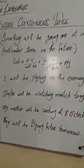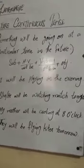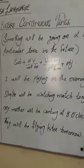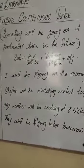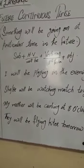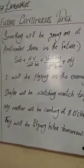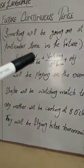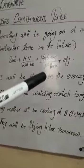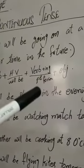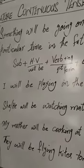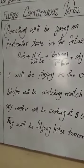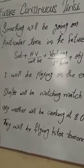اب ہم آتے ہیں future continuous tense کی طرف۔ Future continuous tense is used to talk about something that will be going on at a particular time in the future. ایسا کام جو کہ future میں ایک خاص وقت میں ہو رہا ہوگا اسے کہتے ہیں future continuous tense۔ اس کا formula same ہے — صرف helping verb چینج ہے: subject plus will be plus verb کی first form plus ing plus object۔